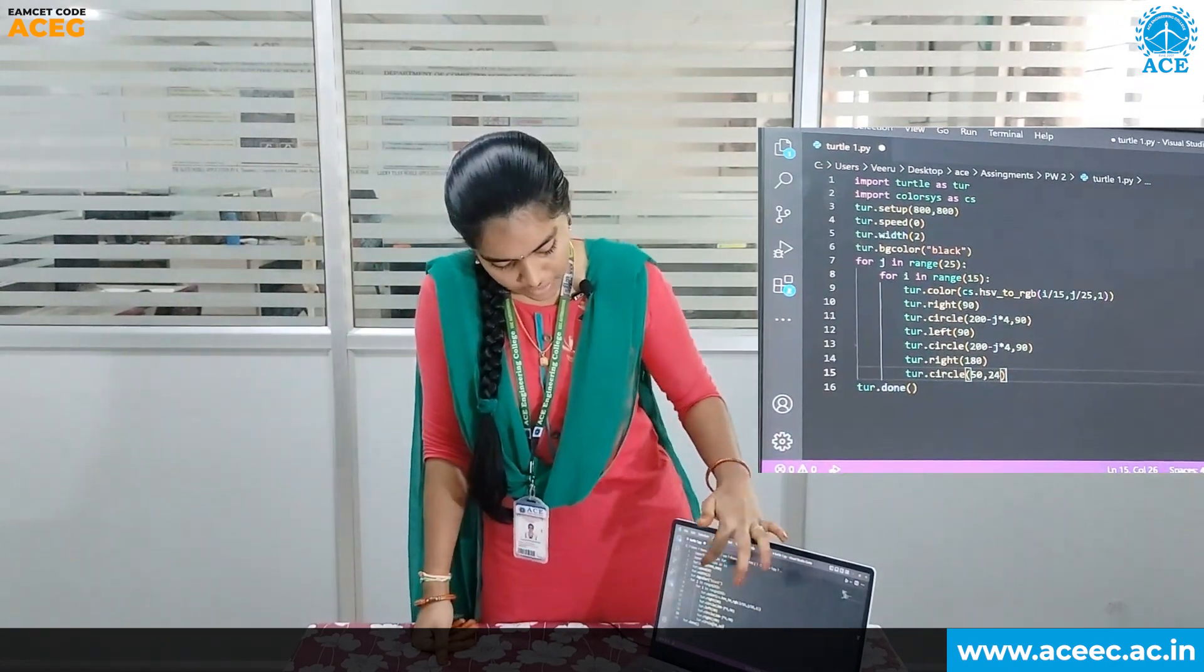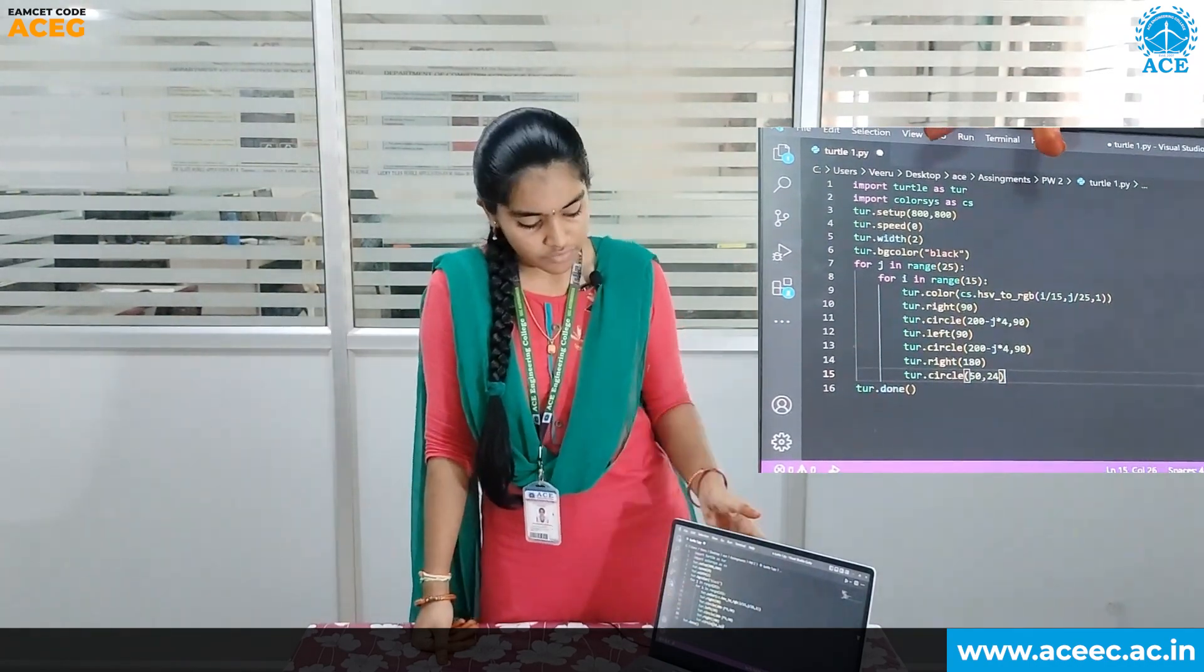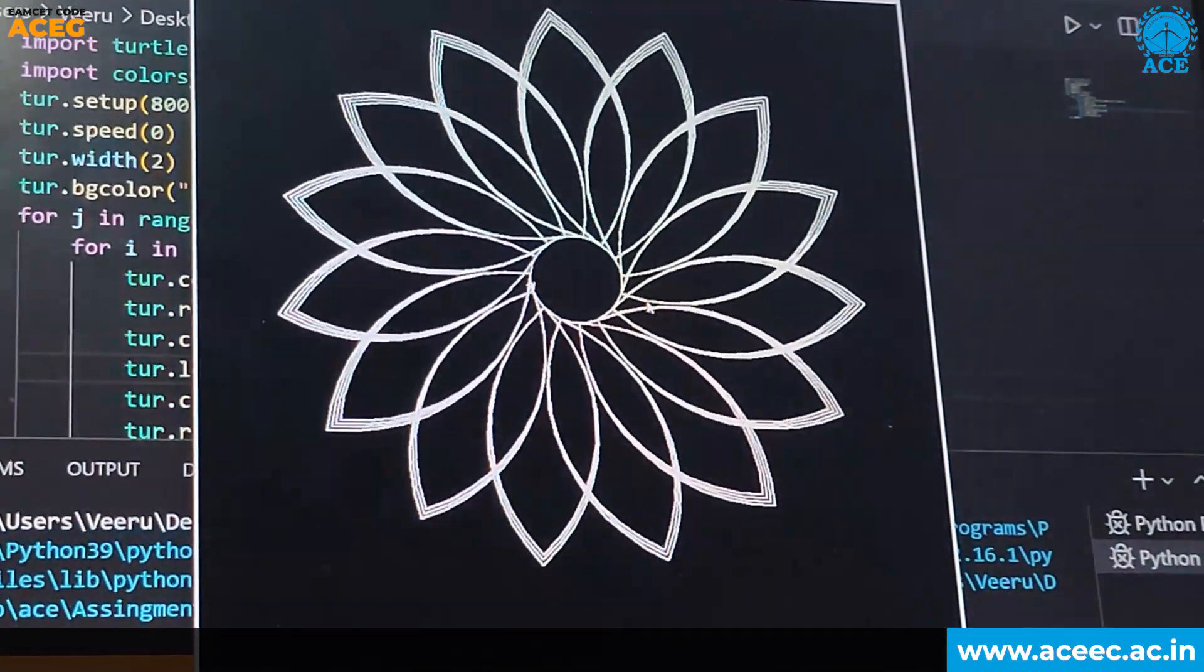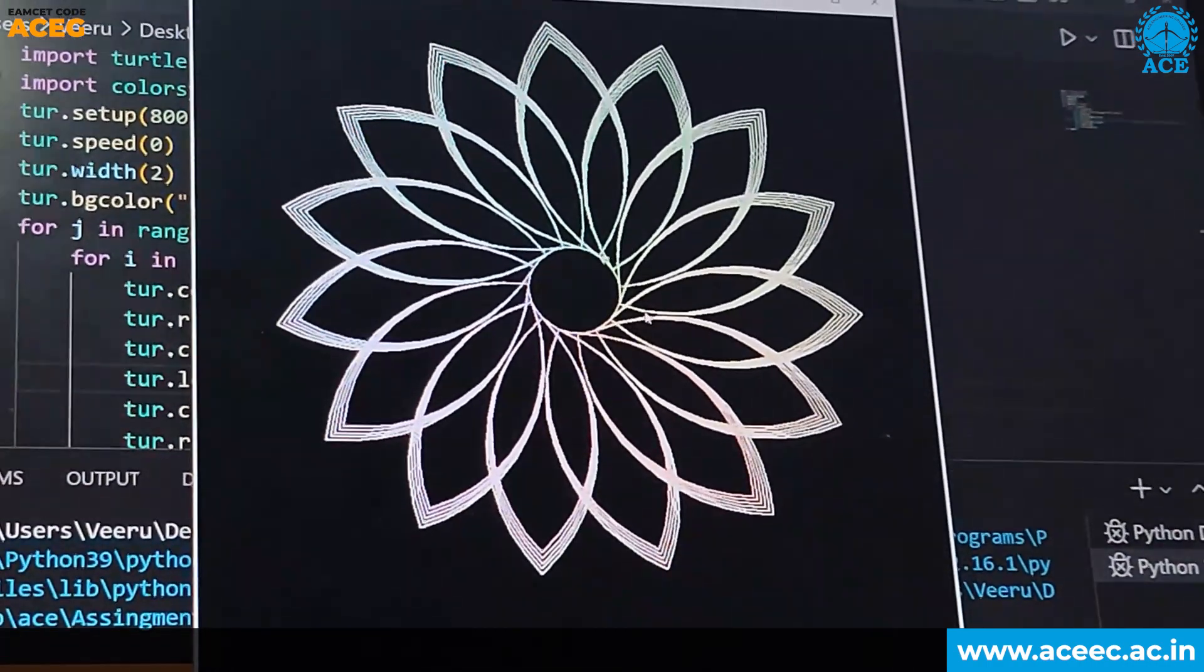So after the completion of the code, we used Turtle Done and we closed the function and here's our output. Outer for loop is iterating 25 times and inner for loop is iterating 15 times.